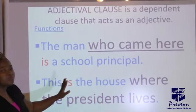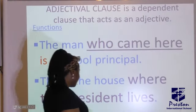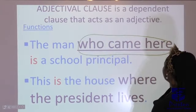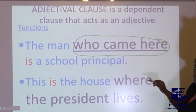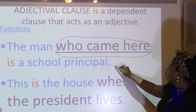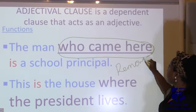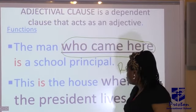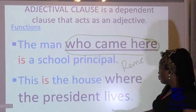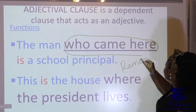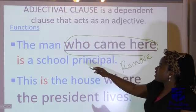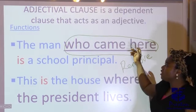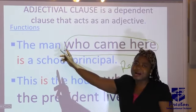Now look at this sentence: 'The man who came here is the school principal.' The highlighted phrase 'who came here' is an adjectival clause. To check for adjectival clauses, remember you must be able to remove the clause from the sentence and it will still make sense. You remove it and the sentence still makes sense — that is an adjectival clause.